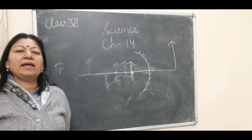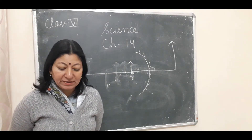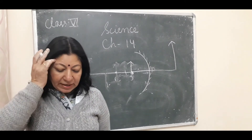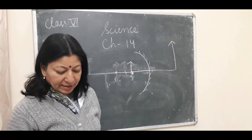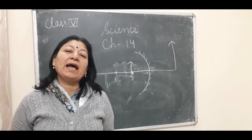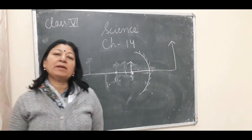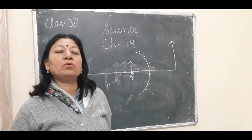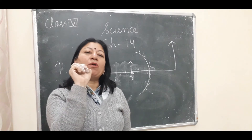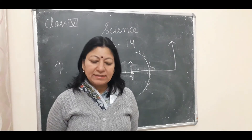So the concave mirror forms many types of images depending on the object's position. The concave mirror is used as a shaving mirror because it enlarges small hairs, making them easier to see. Dentists also use it to enlarge the view of teeth and cavities.